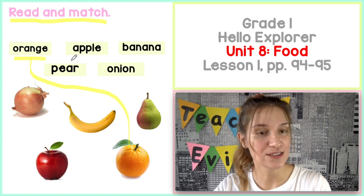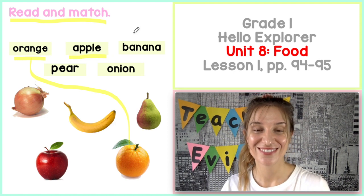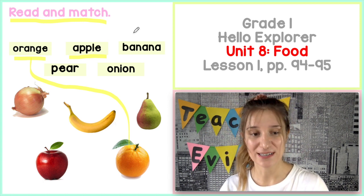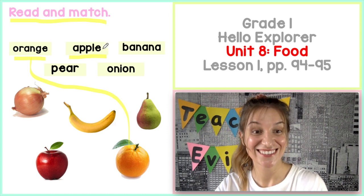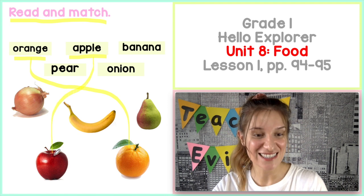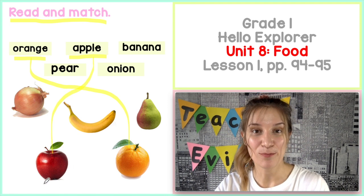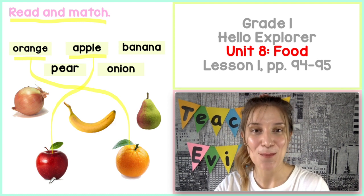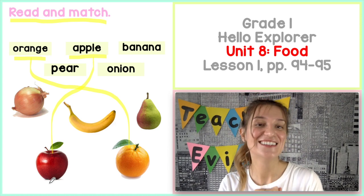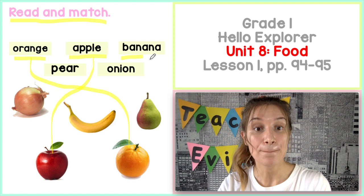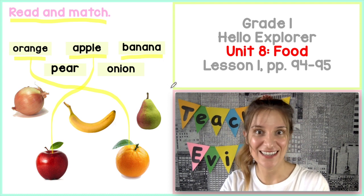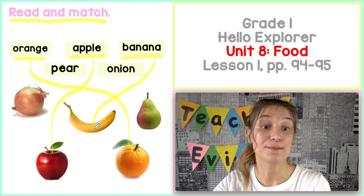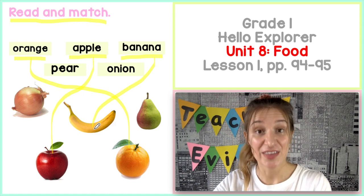How about this word? A co z tym słówkiem? Apple. Which picture shows an apple? Który obrazek pokazuje apple? Apple. This is an apple. To jest jabłko. Powiedzmy razem. This is an apple. Next one. Banana. So easy. To jest bardzo proste. Banana. This is a banana. Powiedzmy razem. This is a banana.